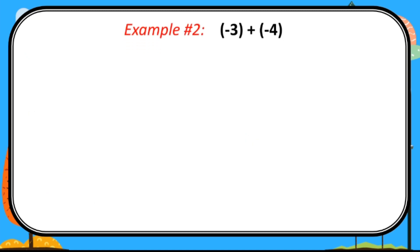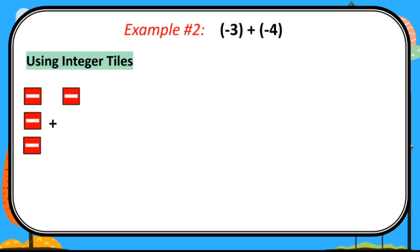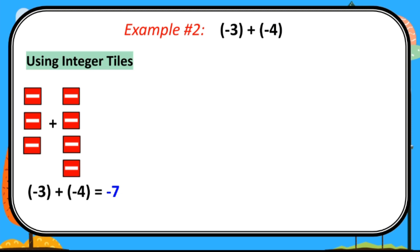Example number 2: negative 3 plus negative 4. As we can observe, they are both negative, so they have the same sign. Using integer tiles, we will use red tiles. We have 1, 2, and 3 for negative 3, and another 1, 2, 3, and 4 for negative 4. So negative 3 plus negative 4 equals negative 7.